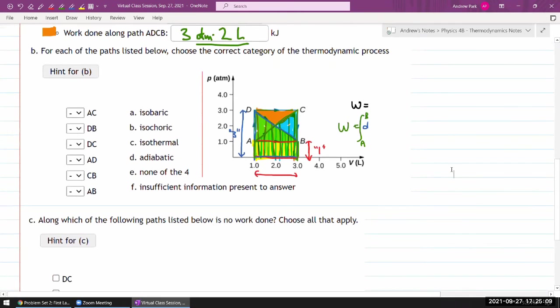Okay. So for each of the paths listed, choose the correct category of the thermodynamic process. Okay, AC, that's this path here. So one thing that you will see in this question is that a lot of thermodynamic processes don't have a name. So AC, this line that's not horizontal or vertical on the PV diagram, it's none of the four. It's just, there's no name for a process like this. It's because there isn't some quantity that we are keeping constant.